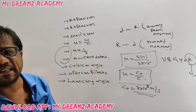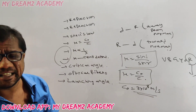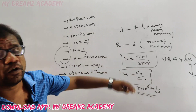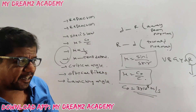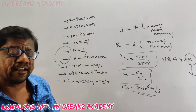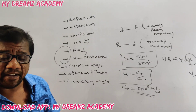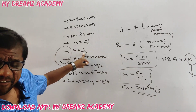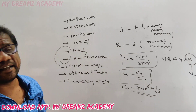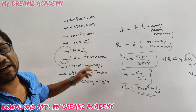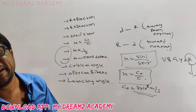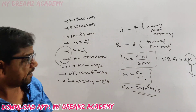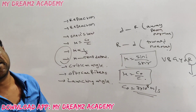Which of the following colors has more refractive index? Which has less? The answer relates to wavelength: wavelength is inversely proportional to refractive index. Also, refractive index depends on temperature — when temperature is increased, refractive index will decrease.